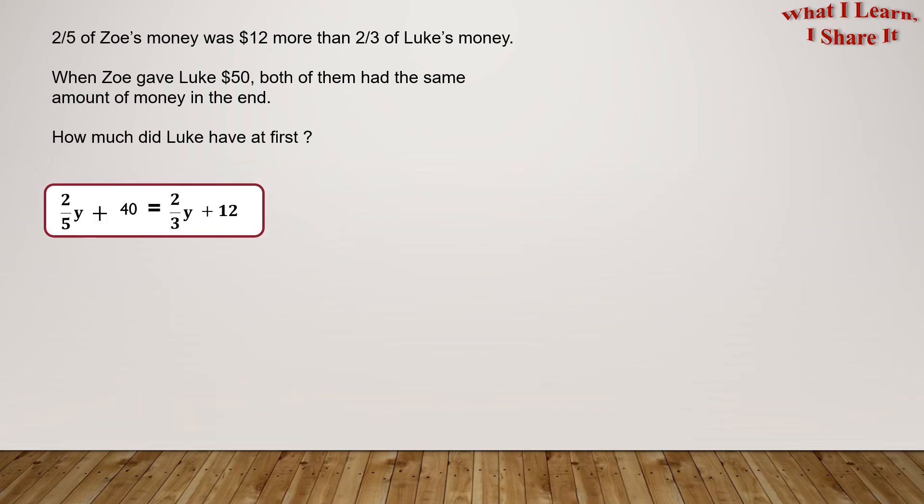Now see, we only have one unknown quantity, Y. Our goal is to find the value of Y. For this, we'll have to bring the terms with Y together. We can do this by transposing. Remember, when we transpose, the signs change. We'll get this equation: 40 equals 2/3Y minus 2/5Y plus 12. We now have to solve 2/3Y minus 2/5Y. But see, the denominators are not equal, so we'll have to make them equal.